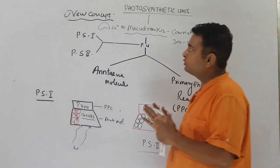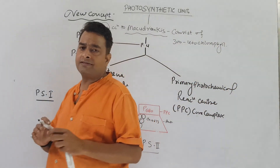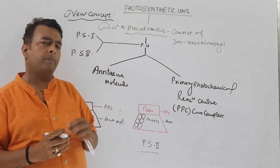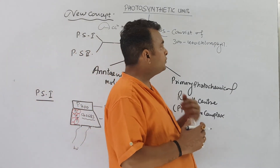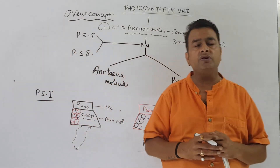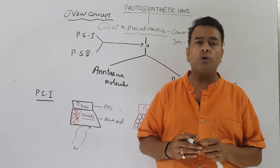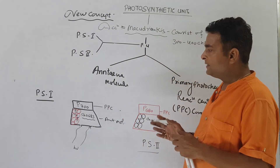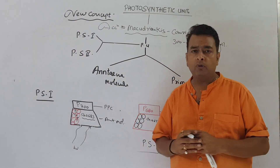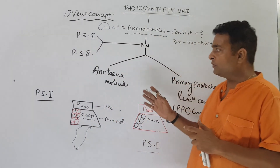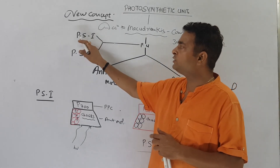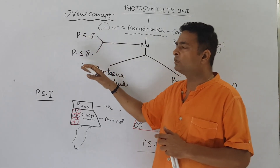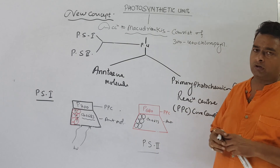Basically we have covered two main topics: the photosynthetic pigment — what it is called — and the photosynthetic unit. The photosynthetic unit is called PS1 and PS2 according to the new concept.